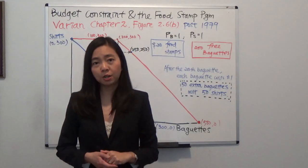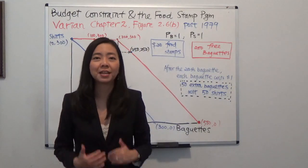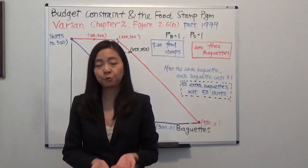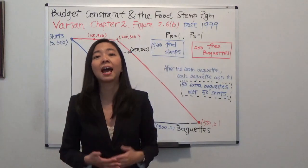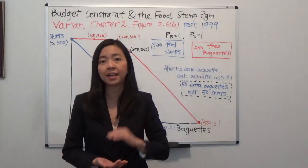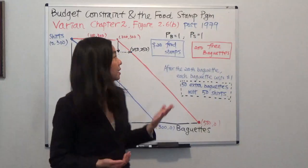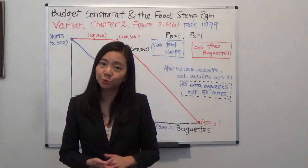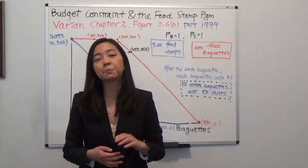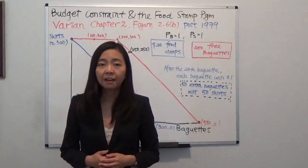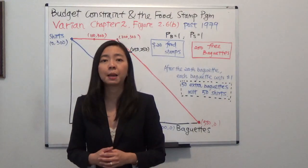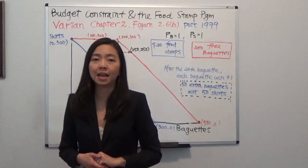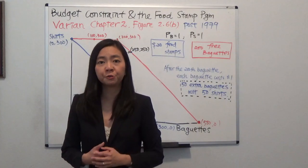So if you watched my previous video, you will know that before 1979, if you want food stamps, you will have to purchase that from the government. But there was a change in the year 1979. So afterwards, if you're a poor family, you no longer have to purchase food stamps from the government, but the government is going to give you food stamps in the amount of $200.